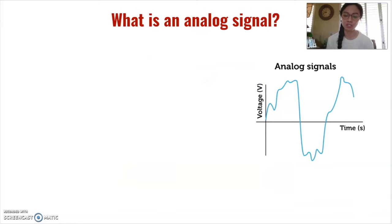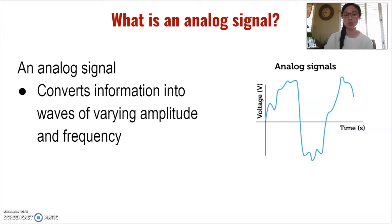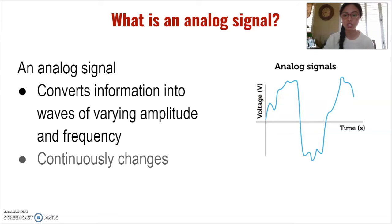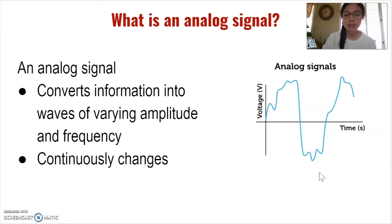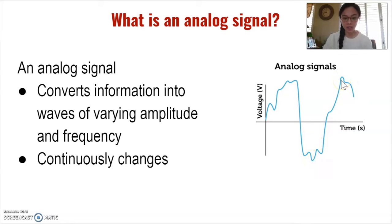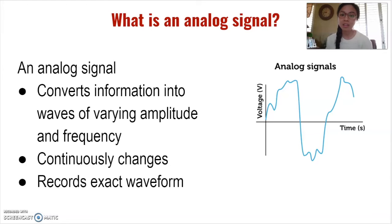We'll start with analog signals. An analog signal converts information into waves of varying amplitude and frequency. As we can see in this graph, the signals are smooth and continuously changing. When something is described as continuous, that means there are infinite values it can take, even within a certain range. The analog signal can have a value that falls anywhere between those two points — an infinite amount of values — and because these signals are continuously changing, they can record the exact waveform that was delivered and received by a device.